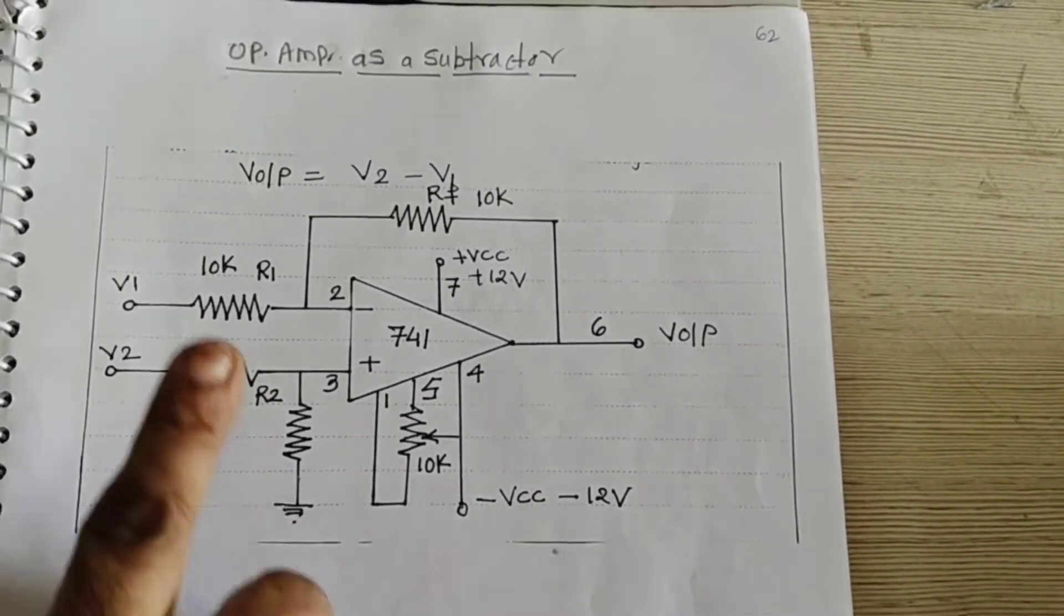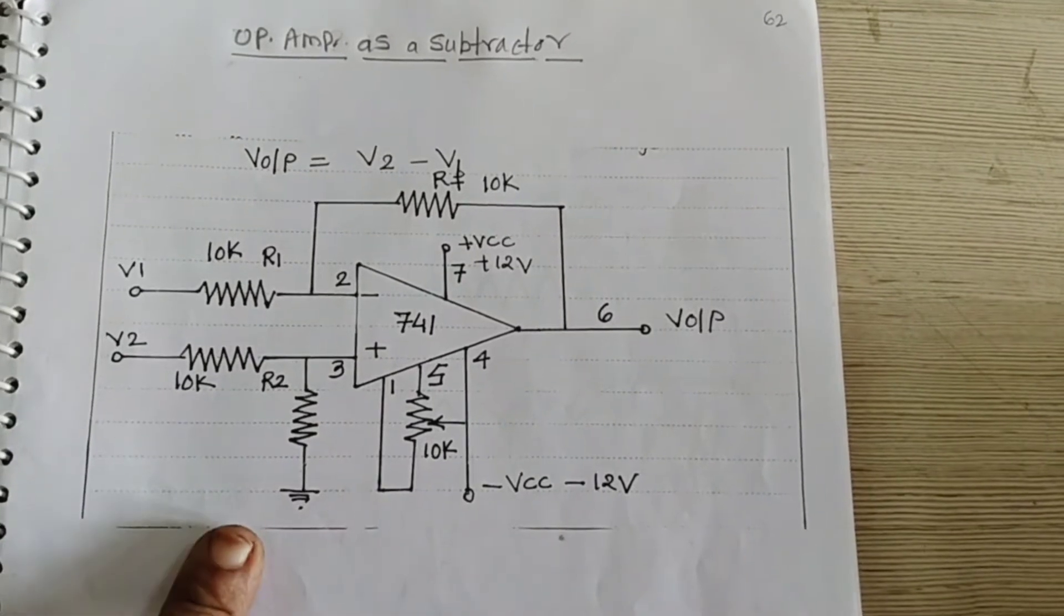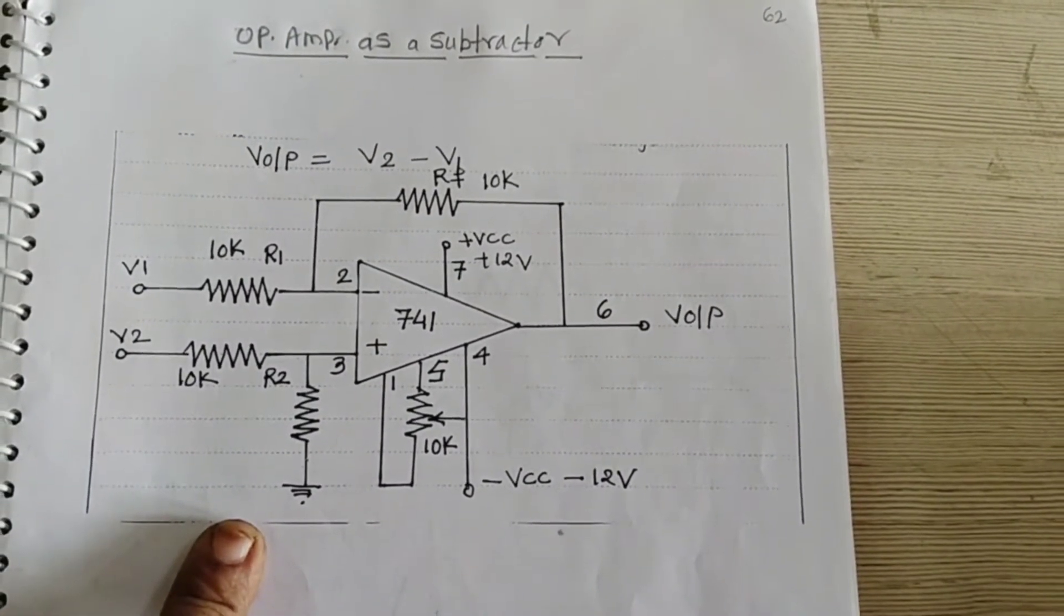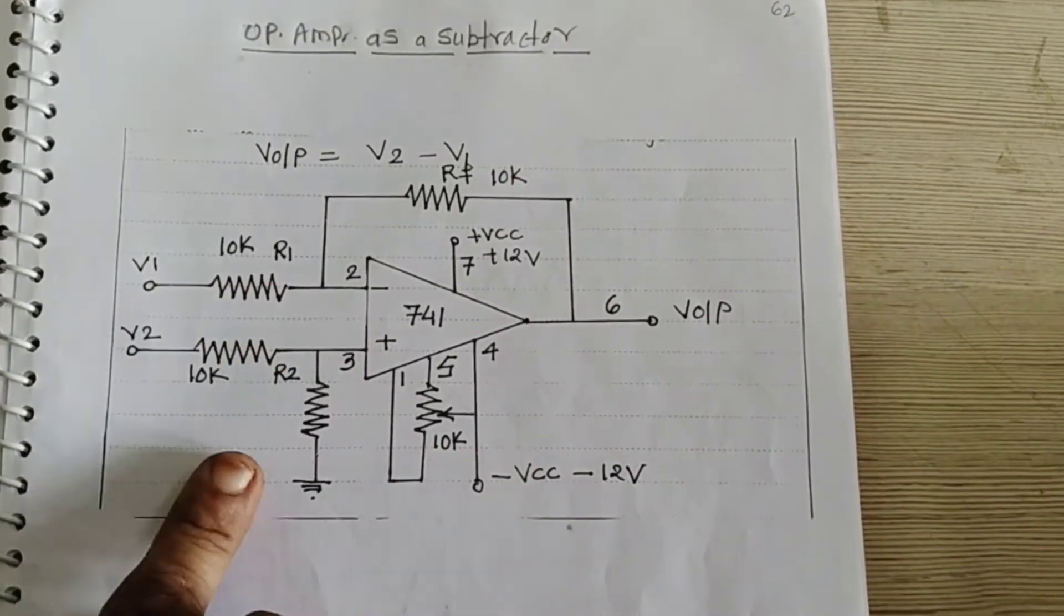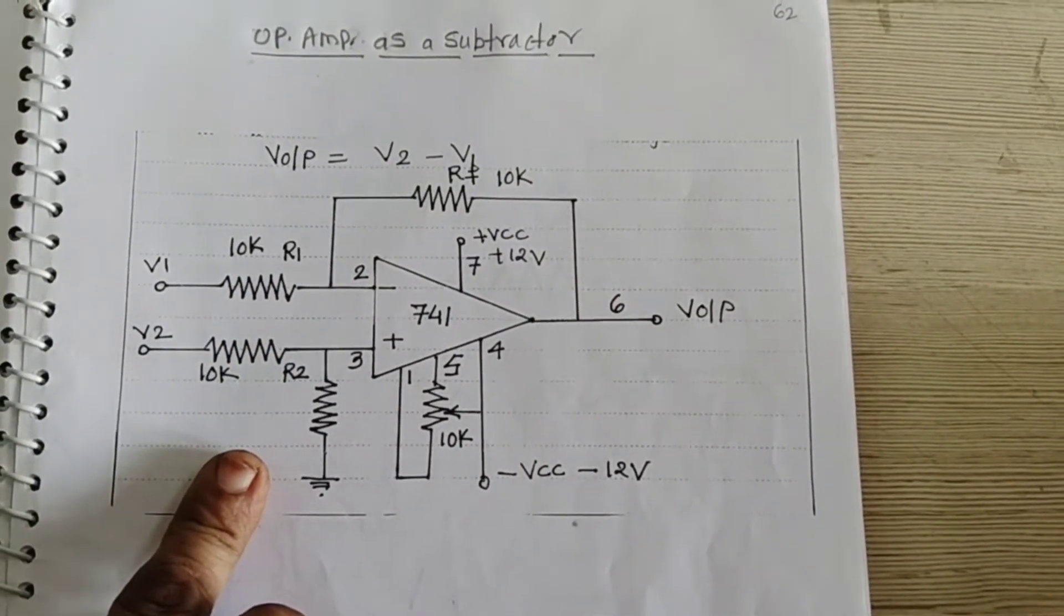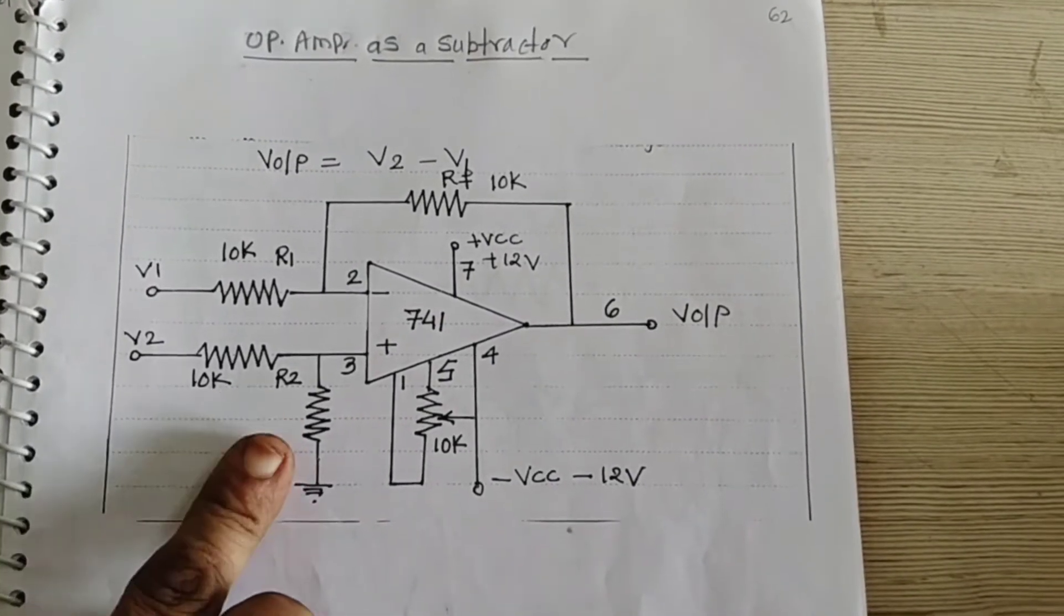The input voltage V1 and V2 are the impedance of the amplifier is applied to inverting terminal through R1 and V2 is also applied non-inverting terminal through R2.